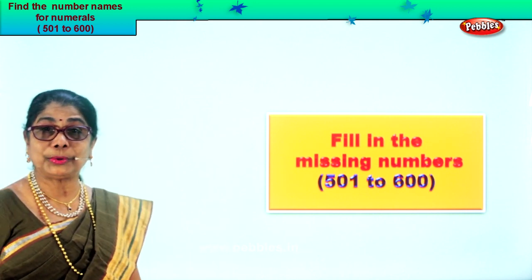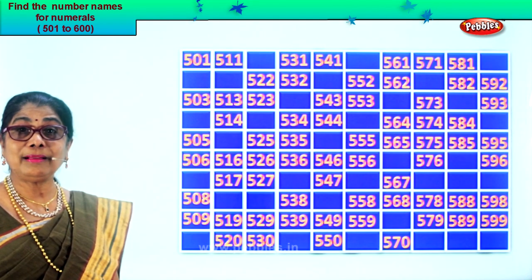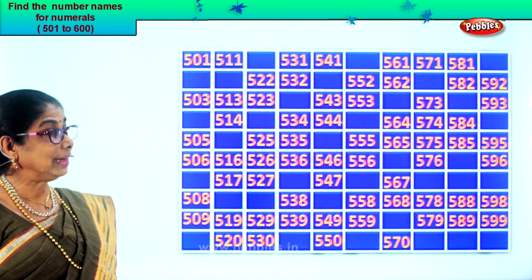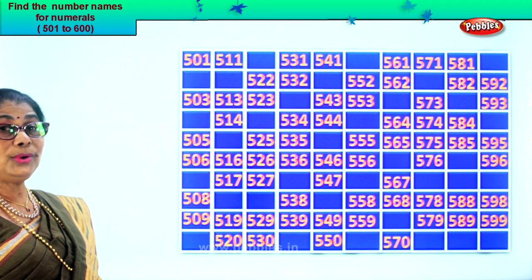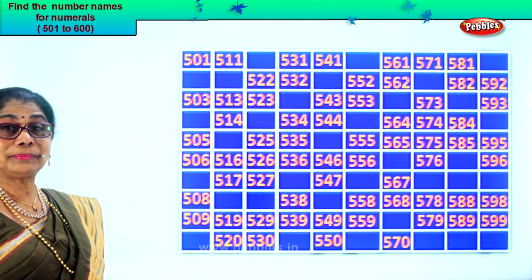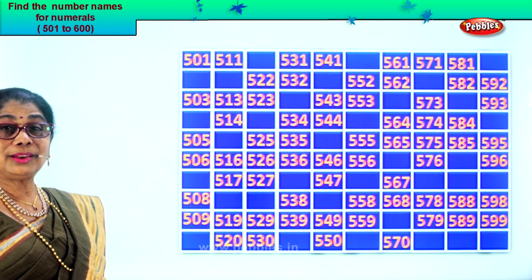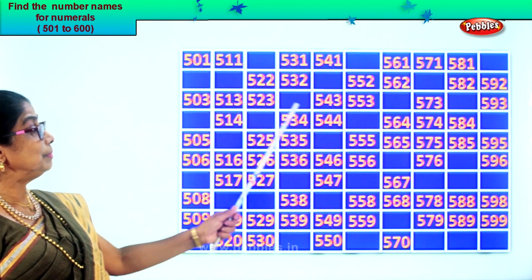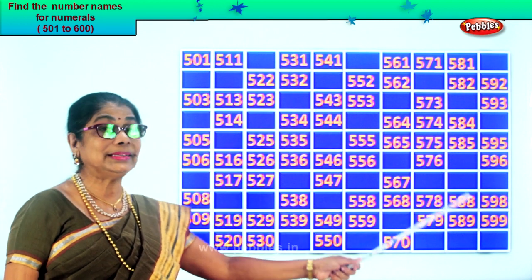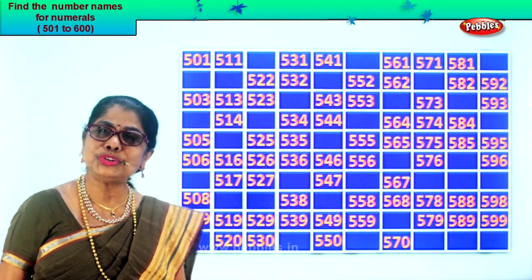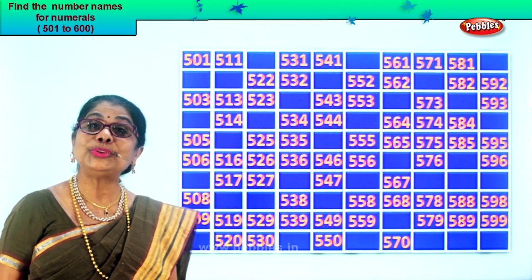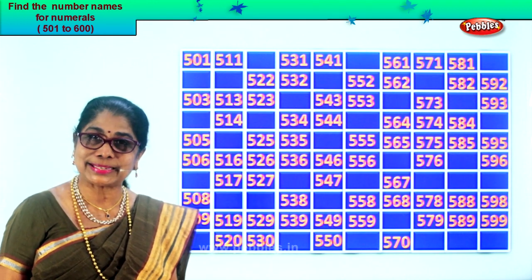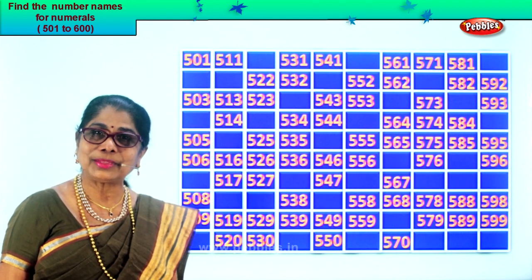Let's look at the board. Look at the numbers laid out. There are a lot of places with missing numbers — I'm sure you can do it. Good.